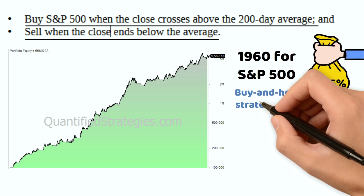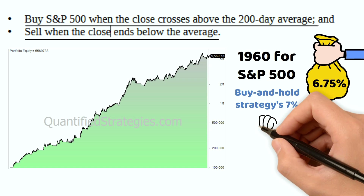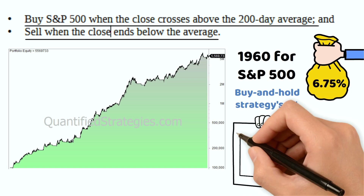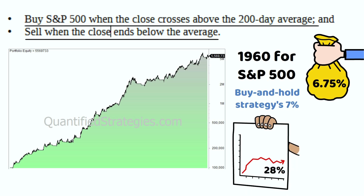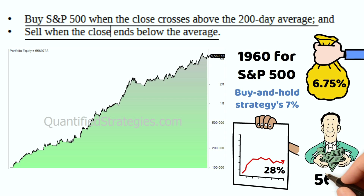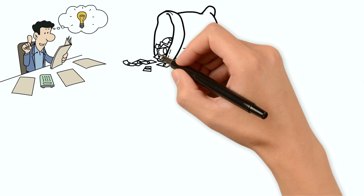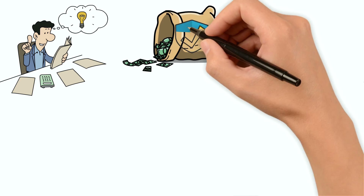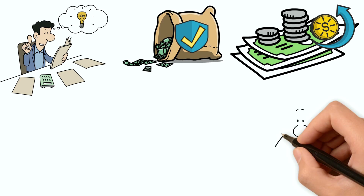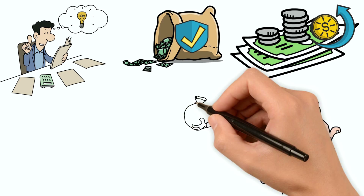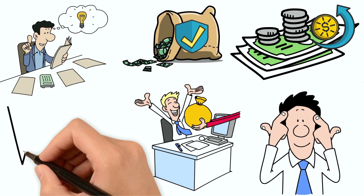The 6.75 percent average annual return since 1960 for the S&P 500 might seem slightly smaller than the buy-and-hold strategy's 7 percent. However, it delivers a smoother ride, protecting your capital with a significantly lower maximum drawdown of 28 percent compared to buy-and-hold's 56 percent. By strategically stepping off the roller coaster during downturns, you shield your investment and allow it to grow from a higher base when the market recovers.